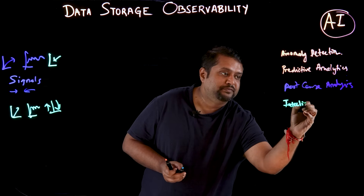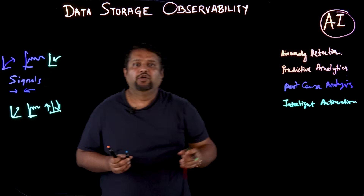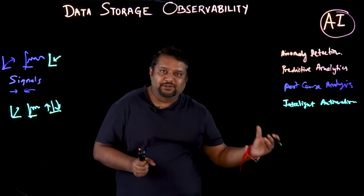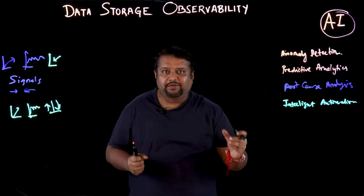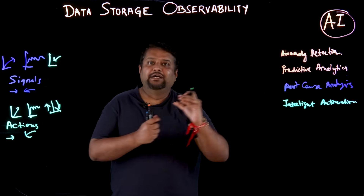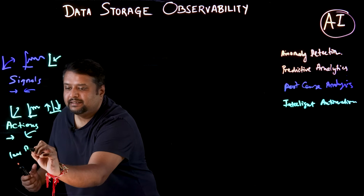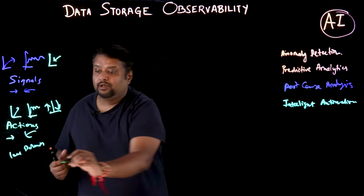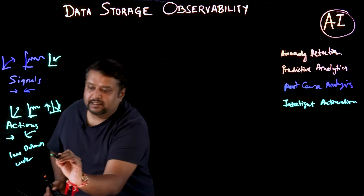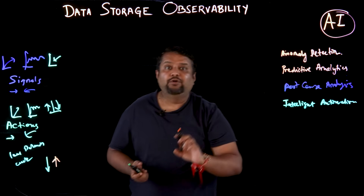The fourth use case is intelligent automation. We all want our storage boxes to be plug-and-play, and AI can help achieve that. AI can recommend or even trigger actions based on observability data — such as load balancing or cache optimization — without any human intervention, reducing downtime and manual operational effort.